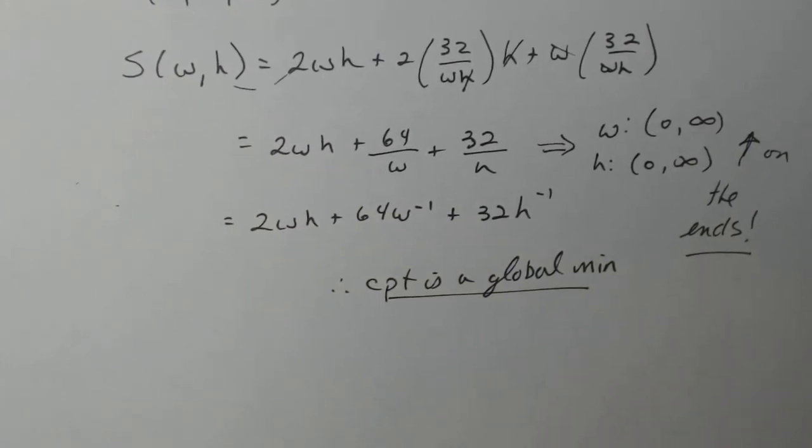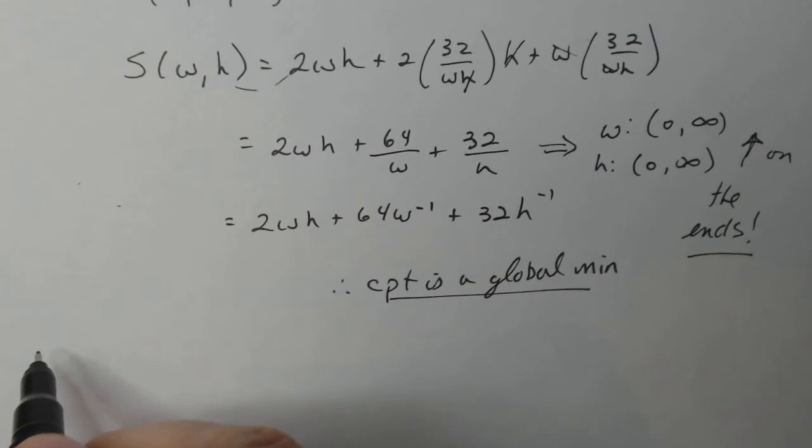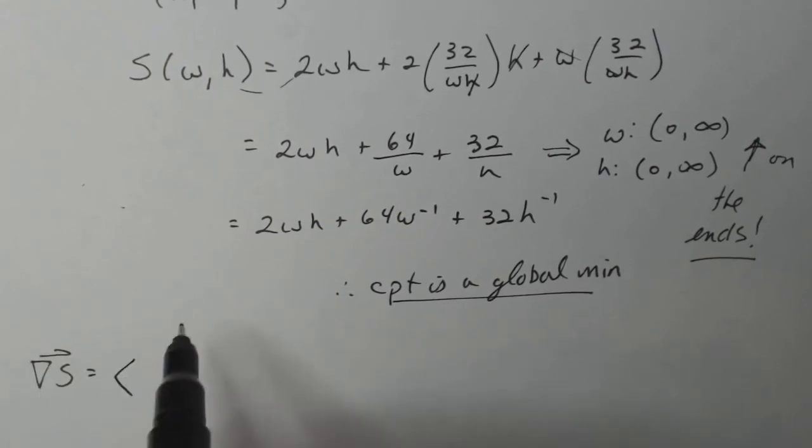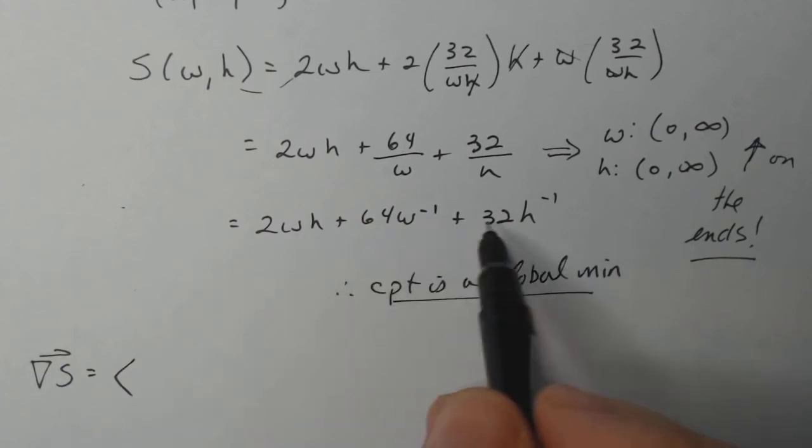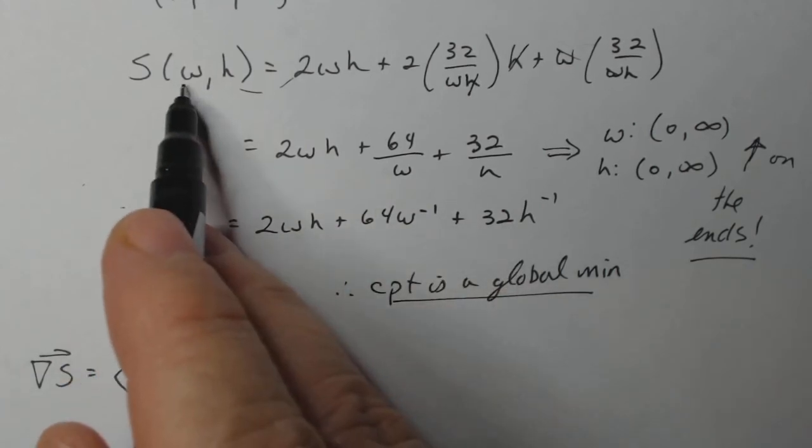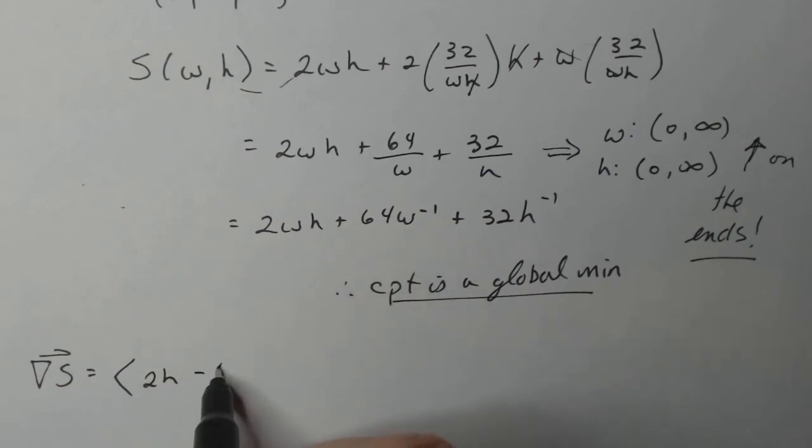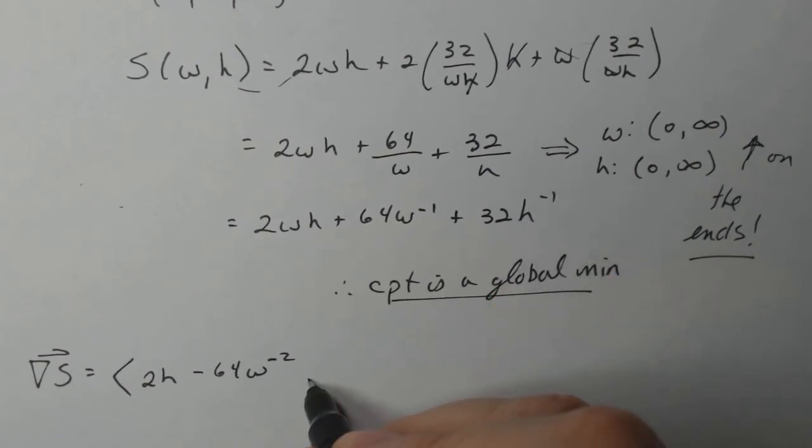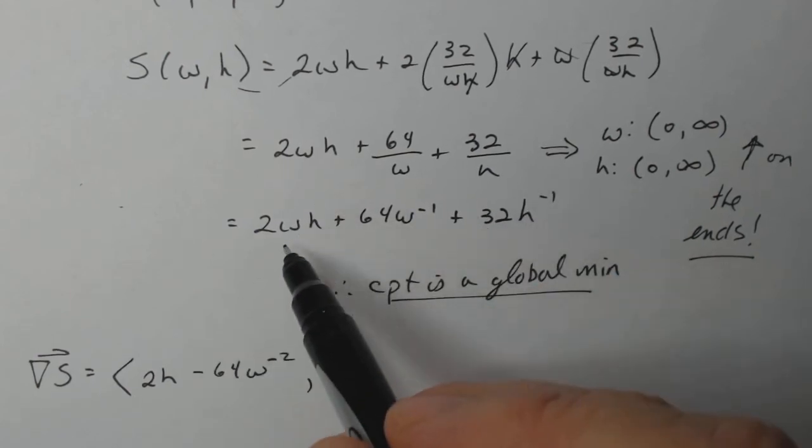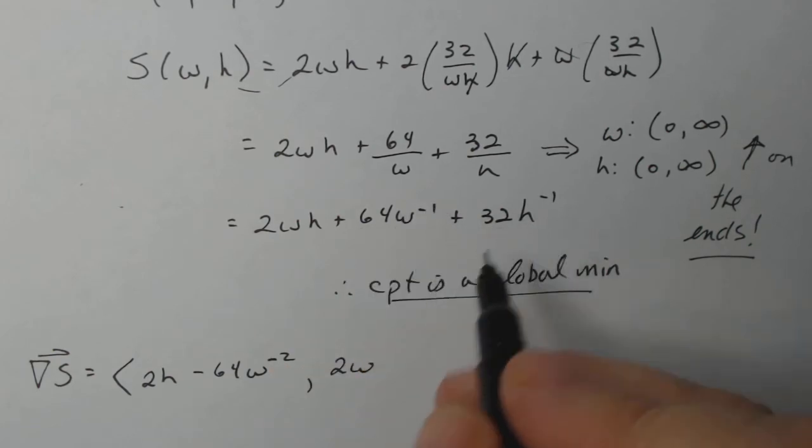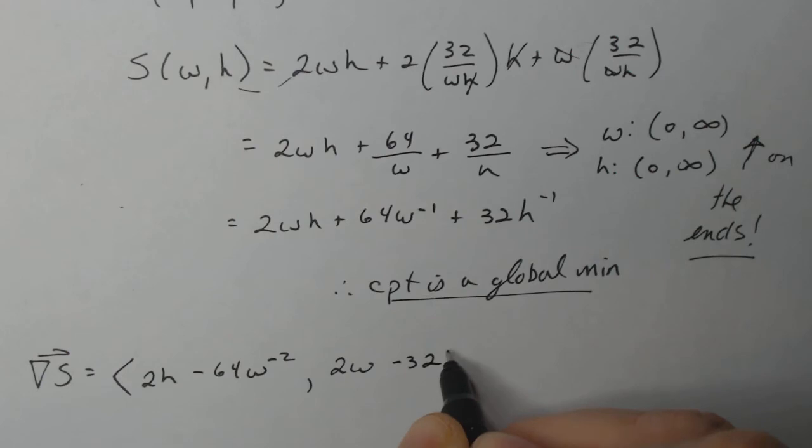Now let's find that critical point. What we need is to find the gradient of S and set it equal to zero. So here's my S. Let's do the gradient with respect to W first and then H second. The derivative with respect to W is 2H minus 64W to the minus two, and that's a constant so it should be zero. The derivative with respect to H: 2W and this will be minus 32H to the minus two.